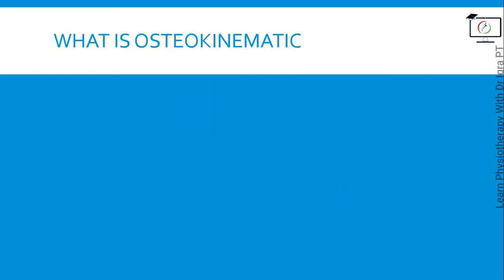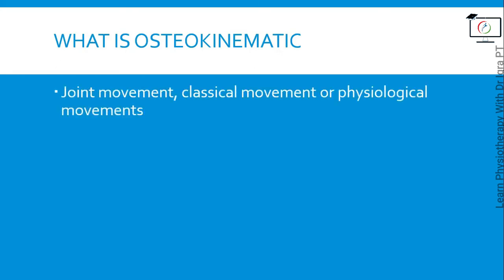Osteokinematics — by the name, 'osteo' means bone and 'kinematics' is related to the characteristics of movement. It is the movement of the bone, also known as joint movement, classical movement, or physiological movements. The normal movements of the human body come under osteokinematics. It is basically the movement of one bone on another bone at a joint.